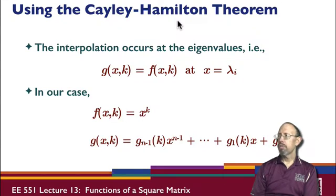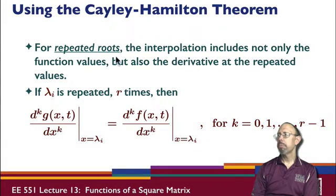If we have simple roots, it's easier. For repeated roots, the interpolation includes not only the function values but also the derivatives at the repeated values. If an eigenvalue is repeated r times, then we would take the derivatives of g being equal to the derivatives of f evaluated at the lambdas. That's what we do in the case of repeated roots. This handles both simple and repeated cases.